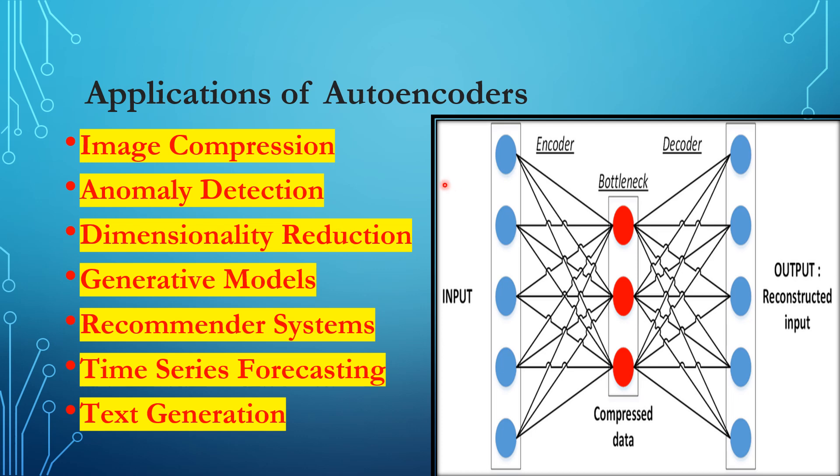Third, dimensionality reduction: autoencoders can reduce the dimensionality of high-dimensional data while retaining the most important information, making data easier to visualize, analyze, and use for further tasks such as clustering and classification. Fourth, generative models: autoencoders serve as the basis for generative models such as variational autoencoders and generative adversarial networks, which can generate new realistic samples similar to training data — with applications in computer graphics, image synthesis, and text generation.